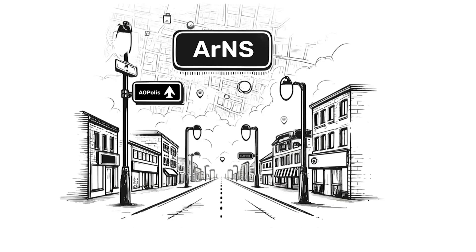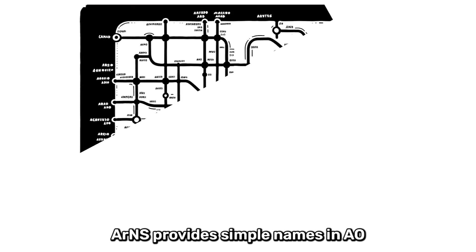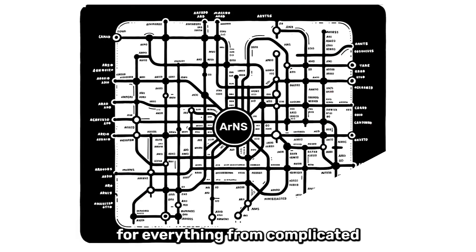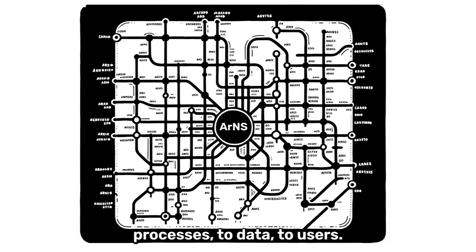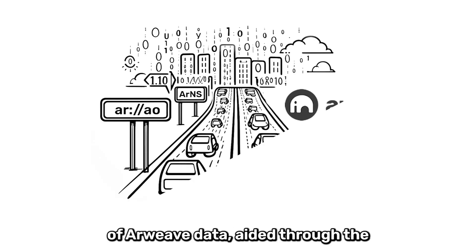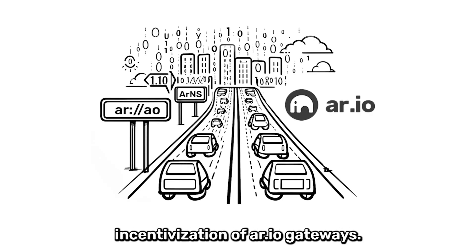How? RNS provides simple names in AO for everything from complicated processes to data to users. This streamlines the finding and use of Arweave data, aided through the incentivization of REO gateways.